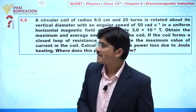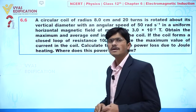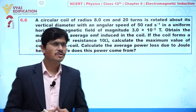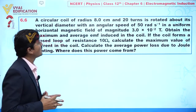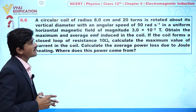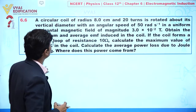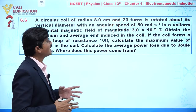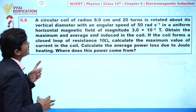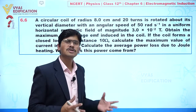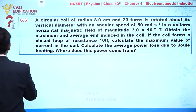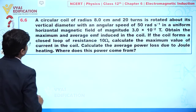We are going to discuss question number 6.6. In this question, a circular coil of radius 8 centimeters and number of turns 20 is rotated about its vertical diameter with an angular speed of 50 radians per second in a uniform horizontal magnetic field of magnitude 3 × 10⁻² tesla.